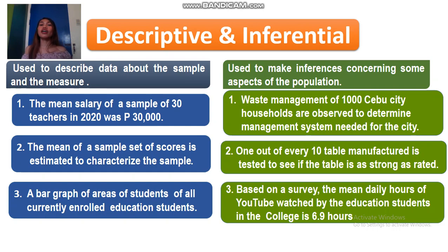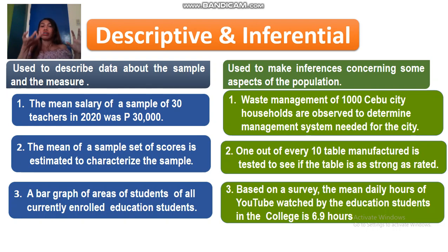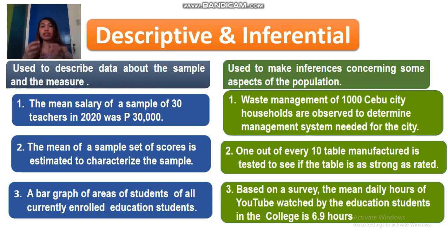To generalize: descriptive statistics means you have a sample or collection, you have data, and the data describes the collection itself. Inferential statistics means you have a population, you create a sample, you have data, and that data is reflected as inferences or conclusions to the entire population. So the key difference is: descriptive — collection, data, data describes collection; inferential — population, sample, data, data reflected as inferences or conclusions to the population.